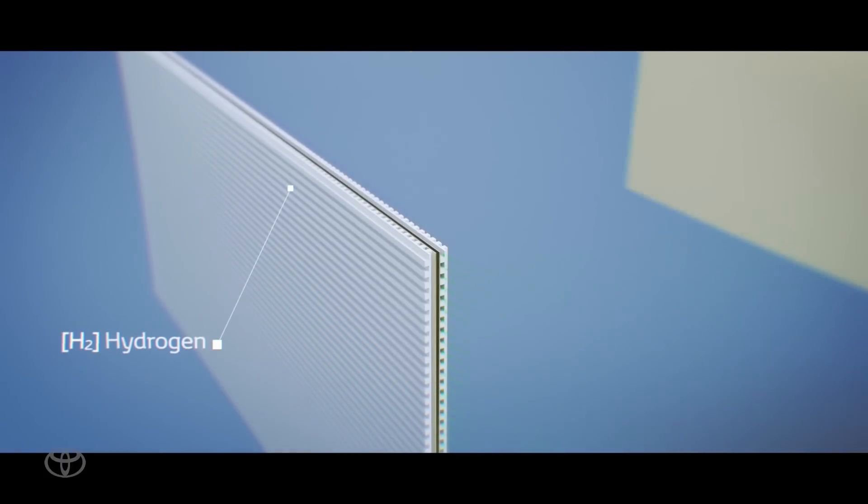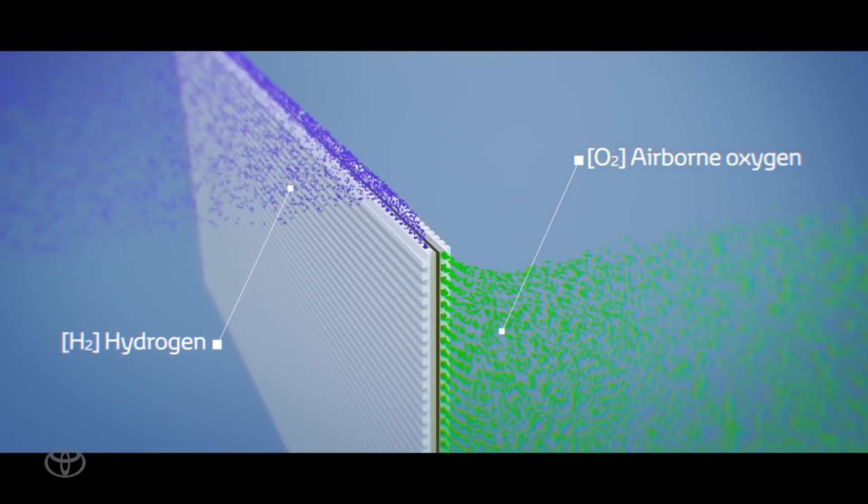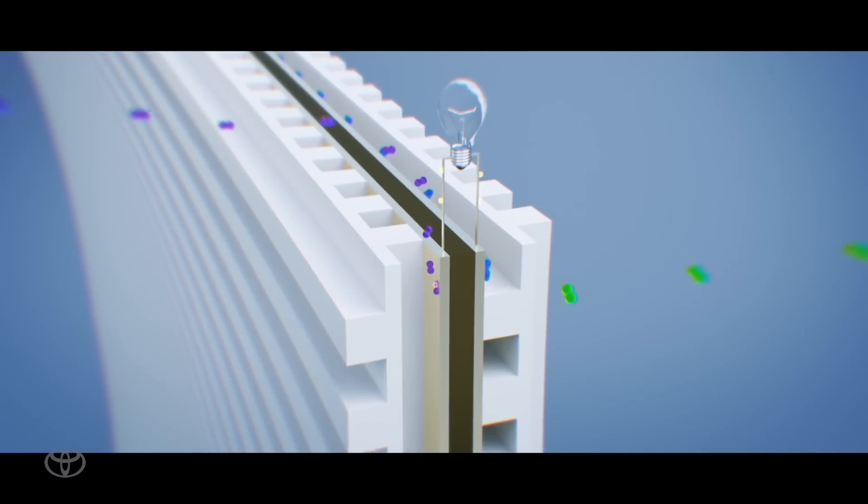This is how the electricity is generated. The car takes in oxygen from the air which meets hydrogen from the high pressure hydrogen tank in the fuel cell.